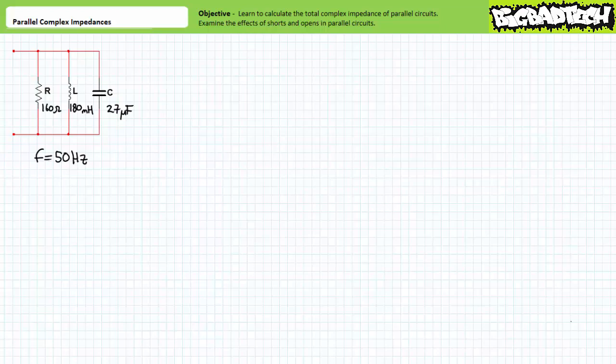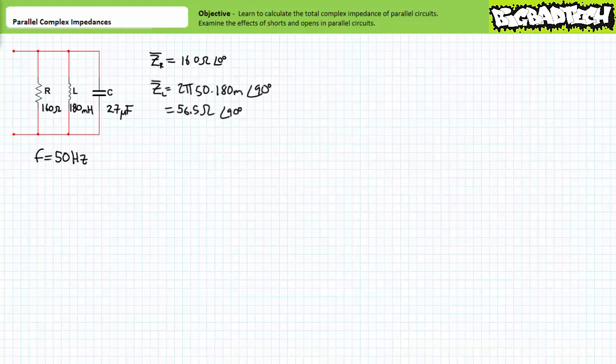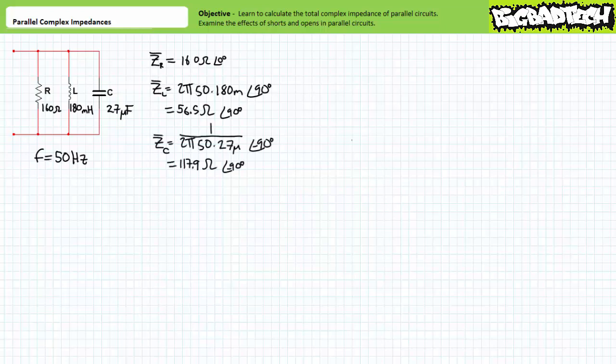Consider another parallel or side-by-side relationship of a 160 ohm resistor, a 180 millihenry inductor, and a 27 microfarad capacitor, this time at an excitation frequency of 50 hertz. We're being asked to solve for the total impedance of this parallel circuit comprised of three elements. The logical choice of techniques is the more involved calculation method for two or more elements in parallel. The 160 ohm resistor is an impedance of 160 ohms at an angle of zero degrees. The impedance of the inductor is 2πfL at an angle of positive 90 degrees — substituting our given values, we arrive at an inductive impedance of roughly 56.5 ohms at an angle of positive 90 degrees. The impedance of the capacitor is 1/(2πfC) at an angle of negative 90 degrees — substituting our given values, we arrive at a capacitive impedance of roughly 117.9 ohms at an angle of negative 90 degrees.